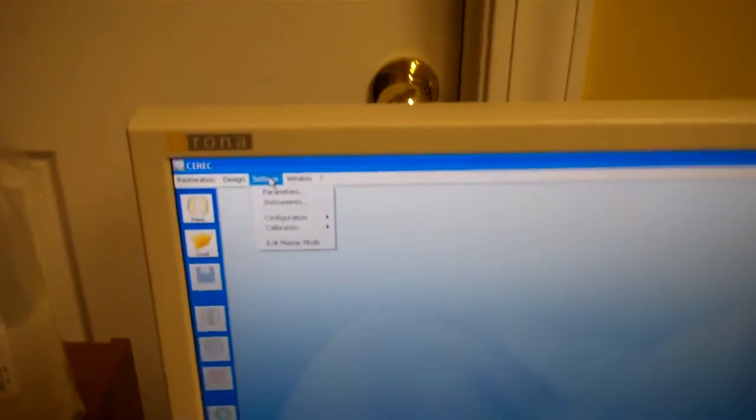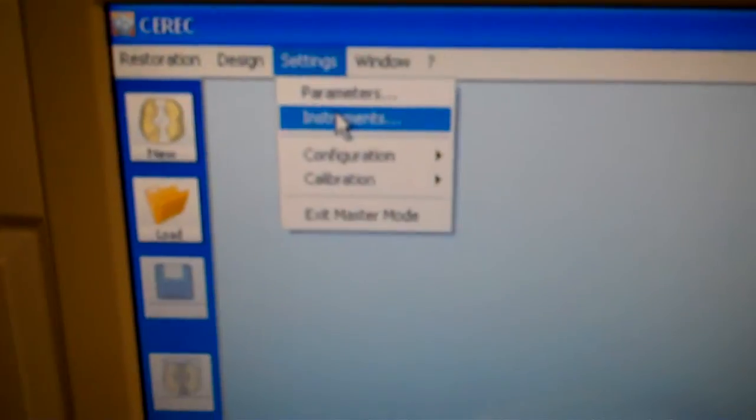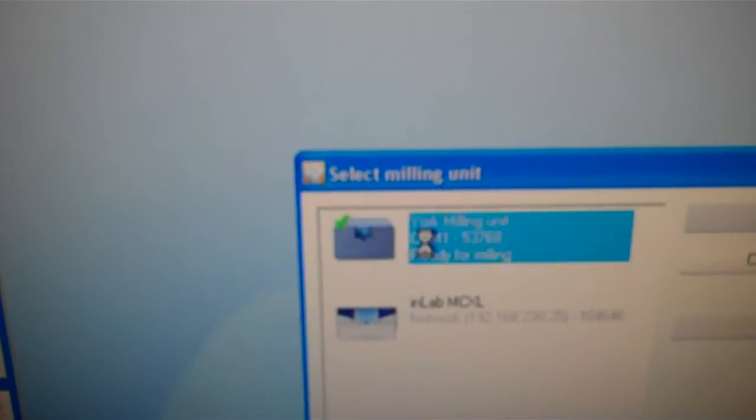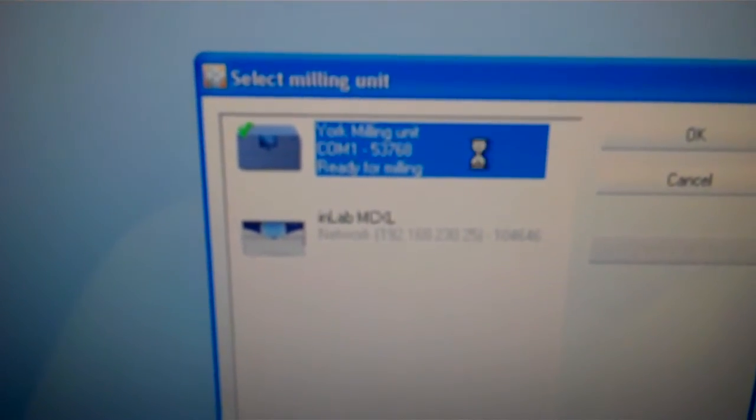Okay Doug, to change the burrs when they have too much wear, all you do is go to Settings, then go to Instruments, select the right milling unit. You're only going to have this one.